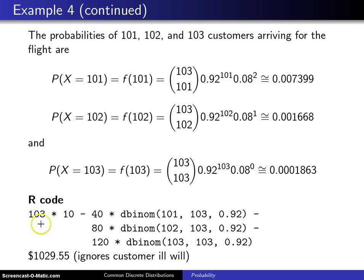So here's the R code: the expected profit will be, we start with our 1030 out front, there is a 40 dollar loss and here is the probability of that 40 dollar loss which is this quantity right here. And there will be an 80 dollar loss if 102 people show up and here is its probability and there it is calculated. And finally there will be a 120 dollar loss with this particular probability here and here is the dbinom in R to calculate that value.